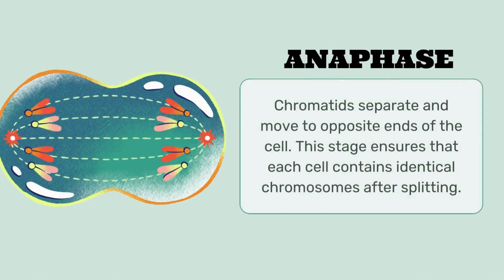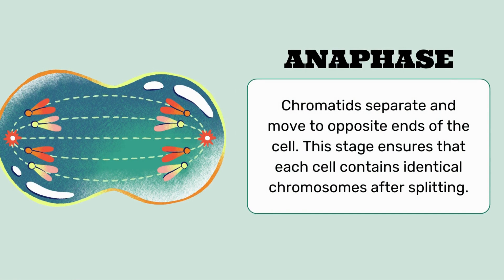The third phase is anaphase. Chromatids separate and move to opposite ends of the cell. This stage ensures that each cell contains identical chromosomes after splitting. In this diagram, you can see that there is a cleavage, and in the center the cell condenses as chromosomes move apart to each pole of the cell.